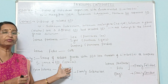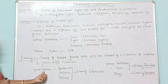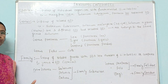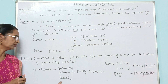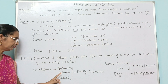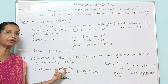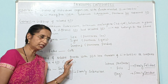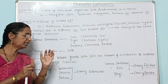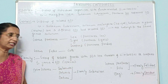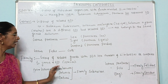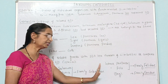On what criteria do genera belong to the same family? For the plant example, take three genera: Solanum, Petunia, and Datura. These three different genera share vegetative and reproductive characters that are almost the same. Because of these vegetative and reproductive character similarities, we place them under the same family called Solanaceae. So Solanaceae is a family formed by these three related genera.